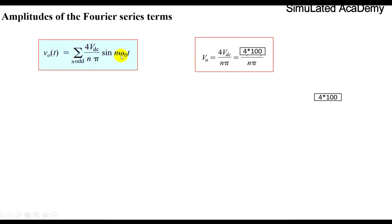Just put the Vdc equal to 100 and write down the equation. Vn is equal to 4 Vdc divided by n pi. This is only we are finding out the amplitude of the Fourier series term for the voltages. It is equal to 4 times 100 divided by n pi.